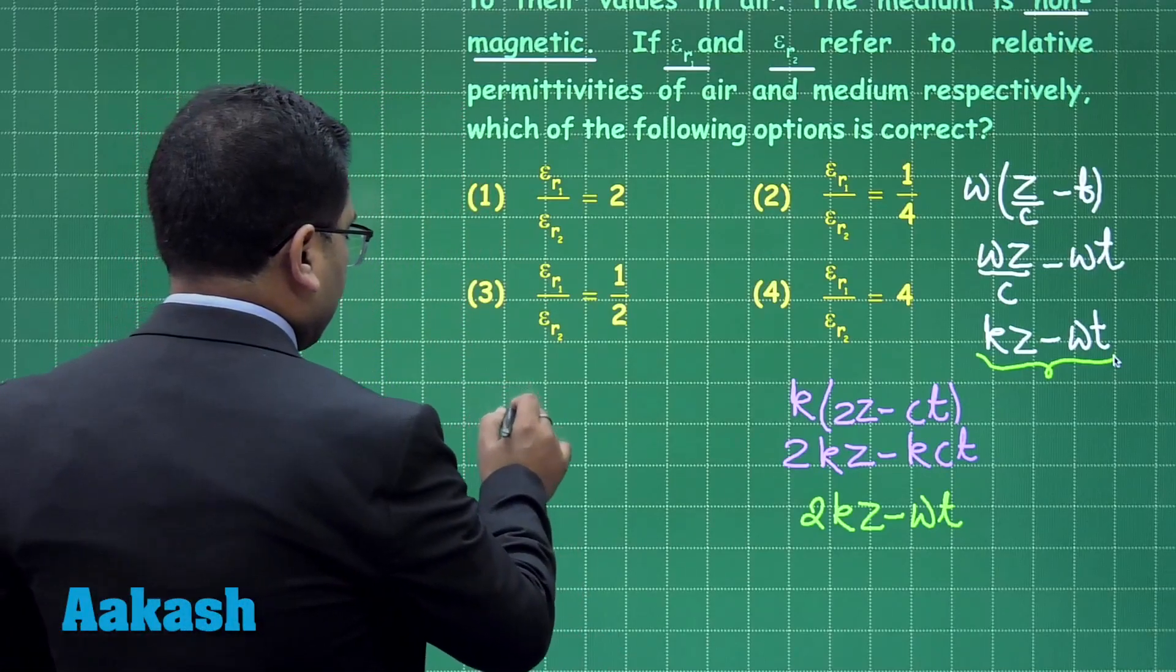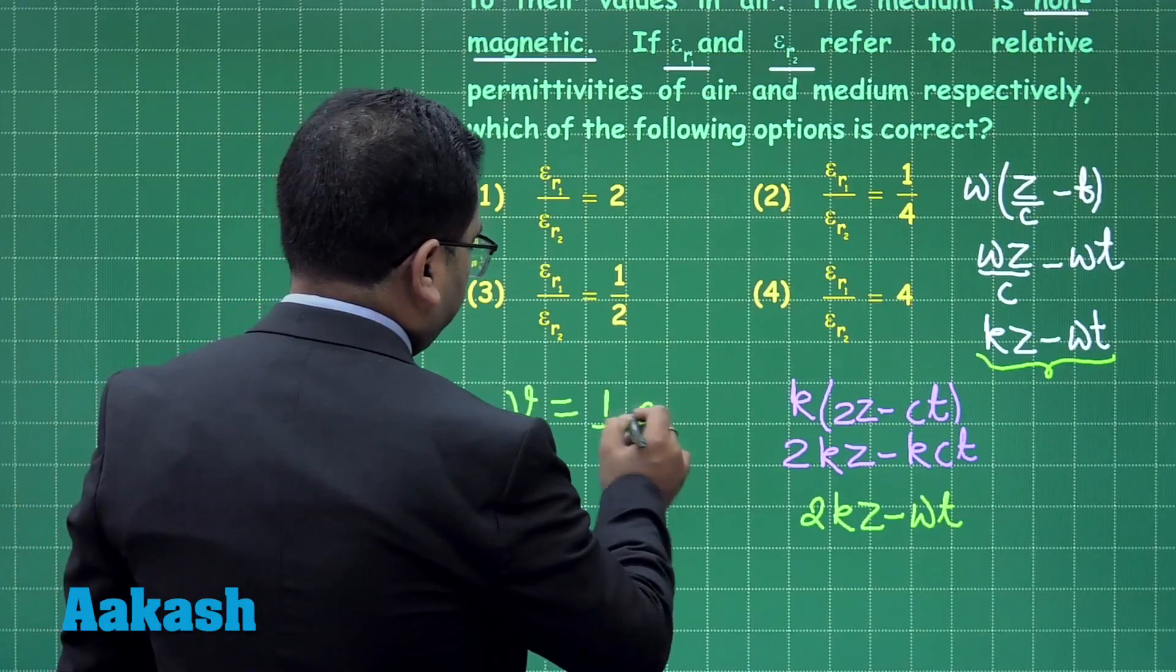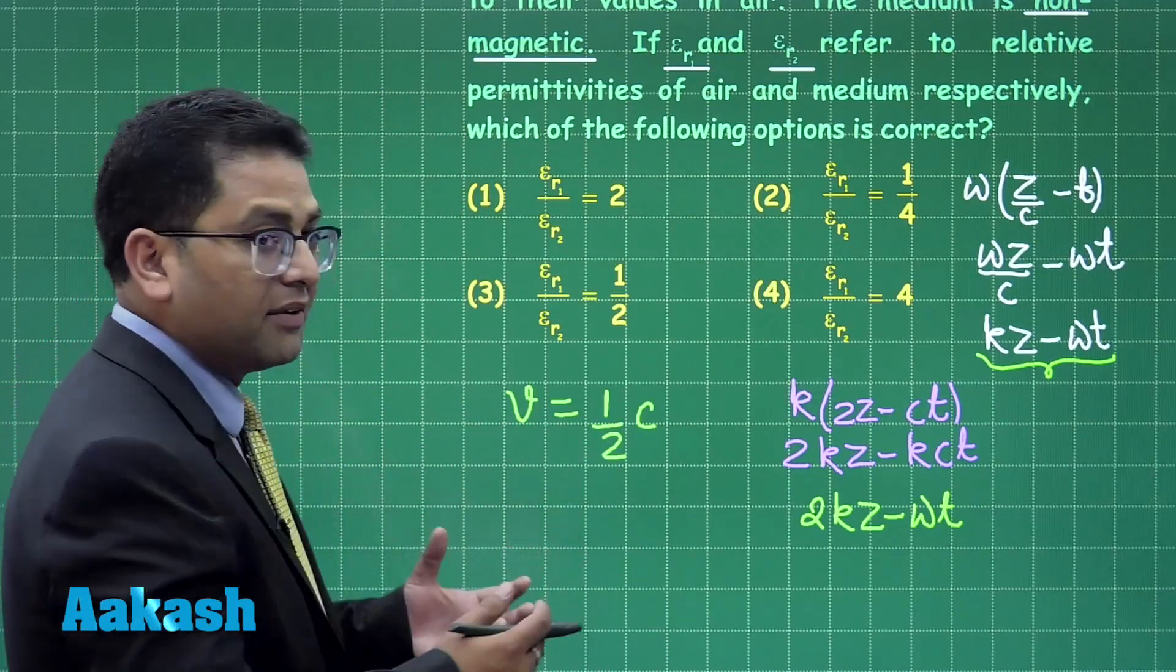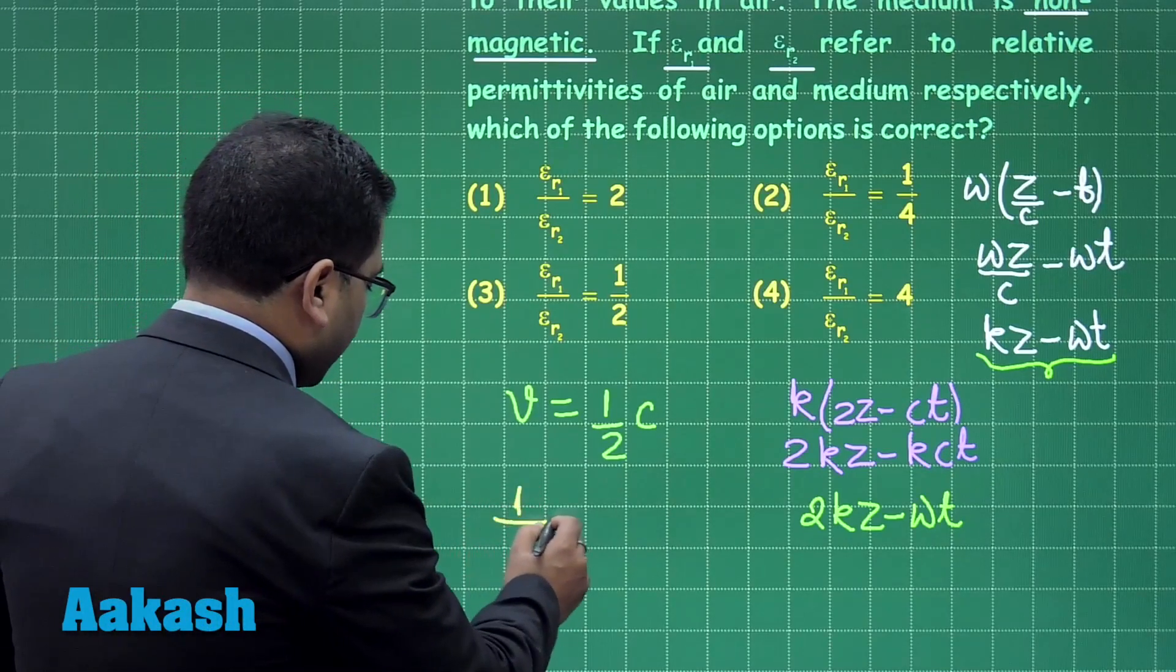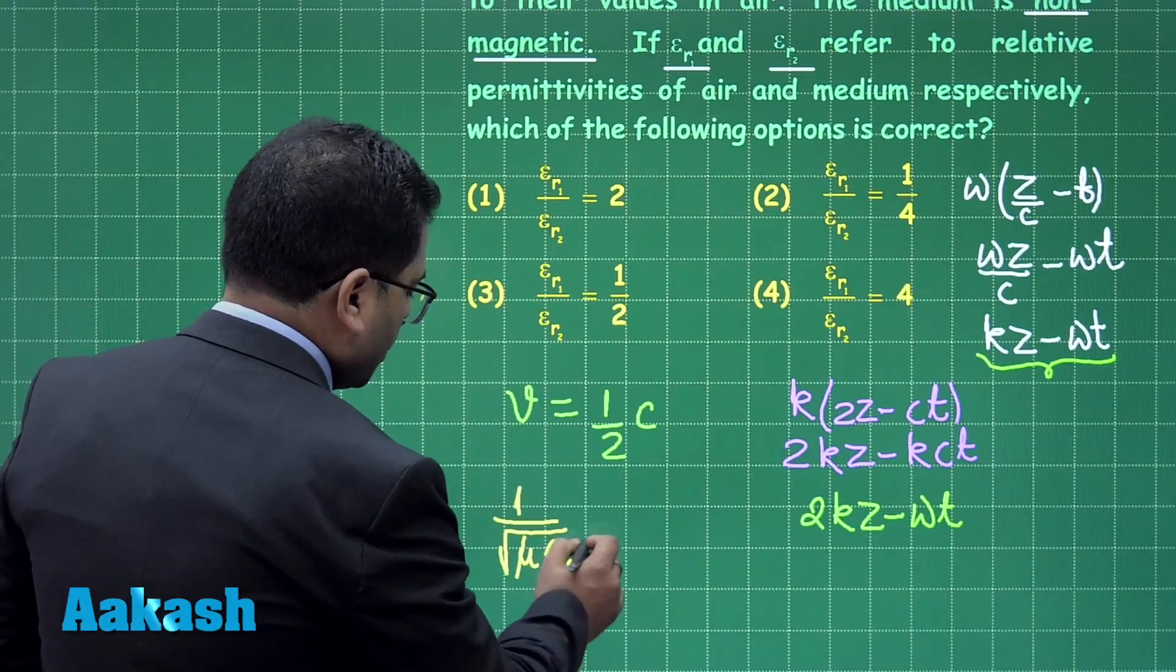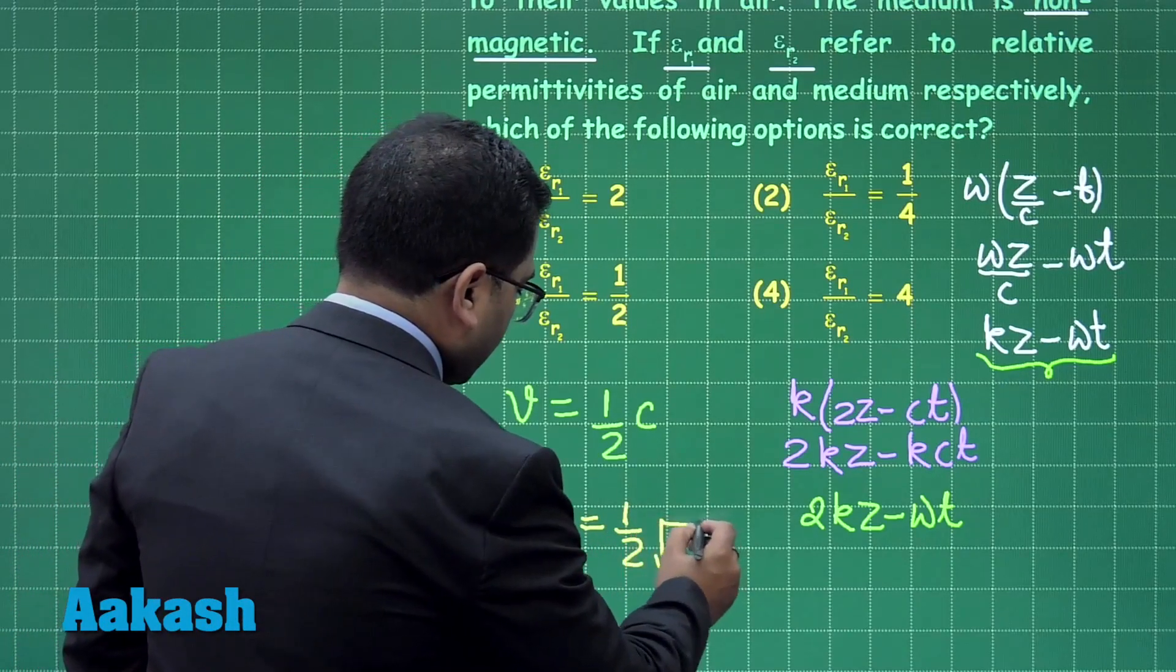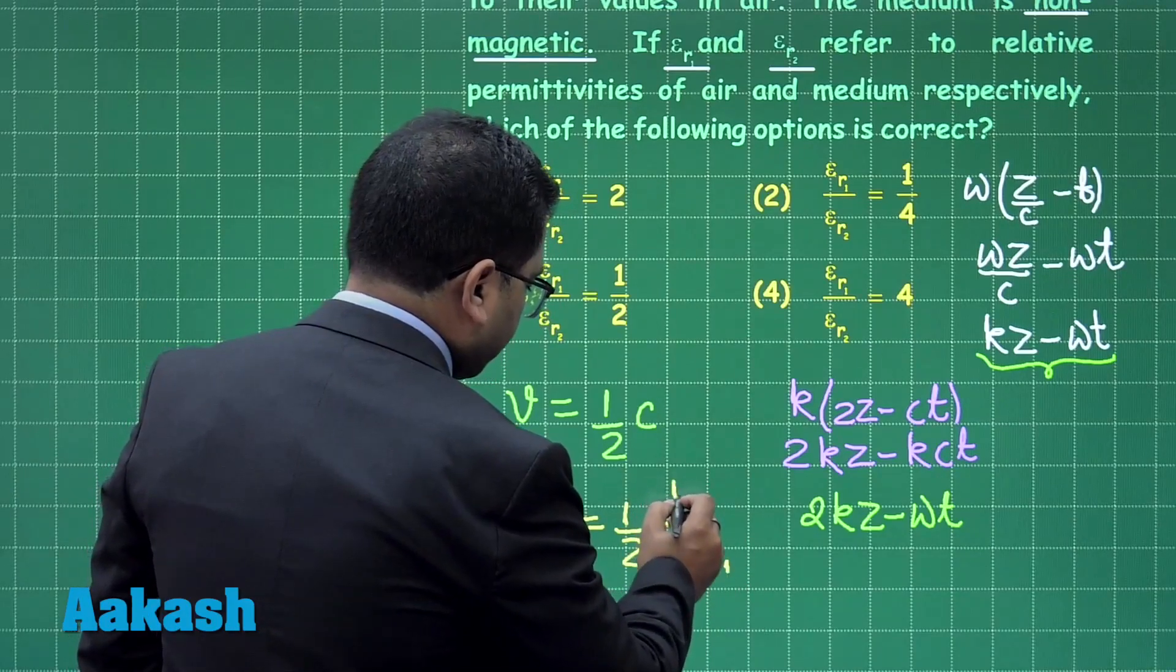So v equals 1/2 c. Recall the definition of speed of electromagnetic wave in any given medium: that is 1 by root of mu times epsilon 2, which equals one half of mu times epsilon 1.